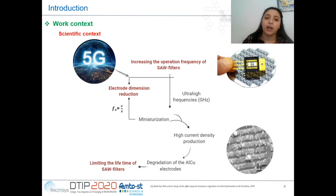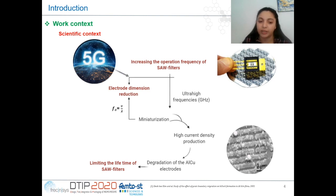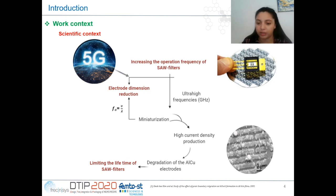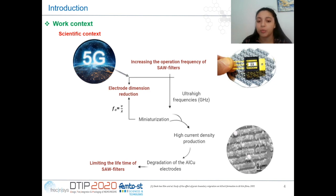In general, these devices are intended to address 5G requirements. In this context, SAW devices must increase their operating frequency, which is achieved by reduction of the electrode dimensions. However, miniaturization at higher frequencies produces a higher current density in the electrodes, which generates aging phenomena.